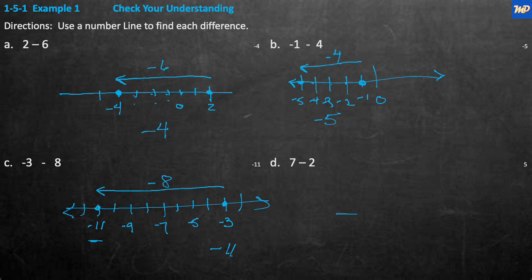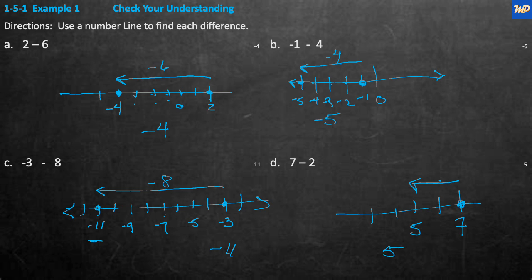Problem D: start at positive 7 on the number line — 7, 6, 5, 4, 3 — and subtract 2. Go 1, 2 places to the left. We go from 7 to 5. The answer is 5.